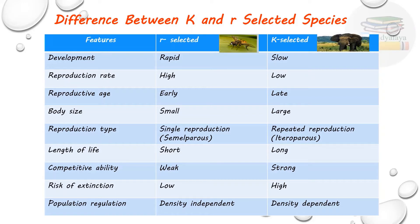Length of life: R selected species have a short lifespan and K selected species have a long lifespan. Competitive ability — meaning competition between individuals of the population — is weak in R selected species and high or strong in K selected species.